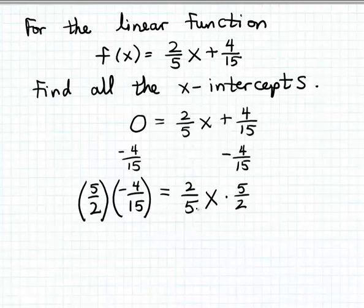So on the right-hand side of the equation, when we multiply 2/5x times 5/2, well, you can multiply these coefficients together, the 2/5 times the 5/2. And in that case, the fives will divide out and the 2s will divide out. And so you'll end up with just x on the right-hand side of the equation.